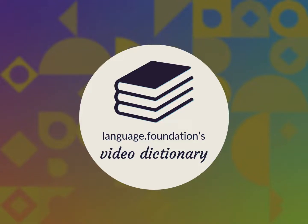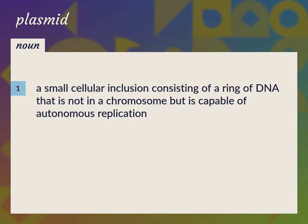Language.Foundation's Video Dictionary, helping you achieve understanding. A small cellular inclusion consisting of a ring of DNA that is not in a chromosome, but is capable of autonomous replication. Plasmid DNA.